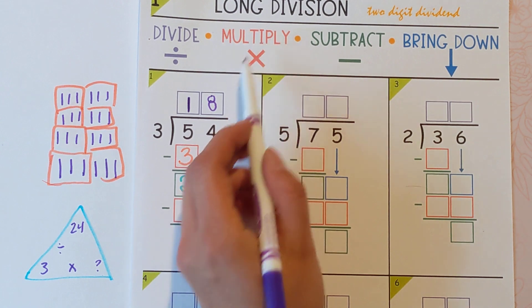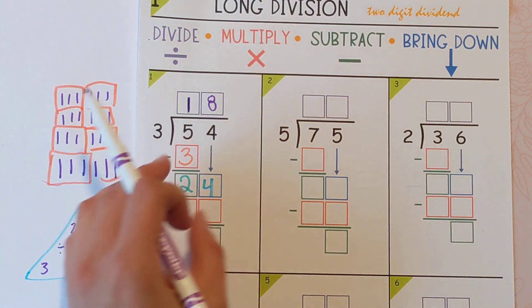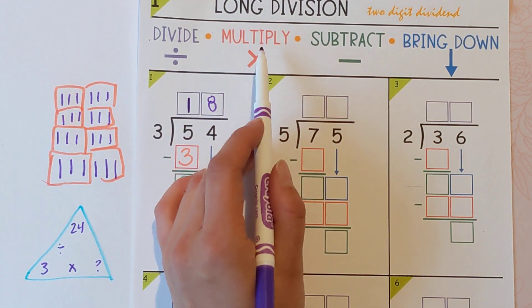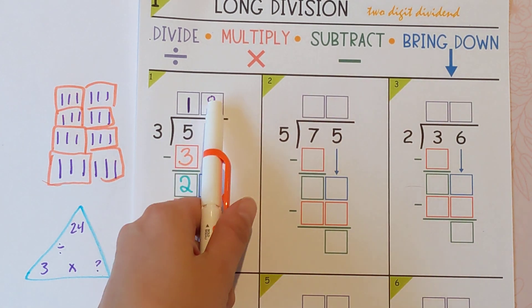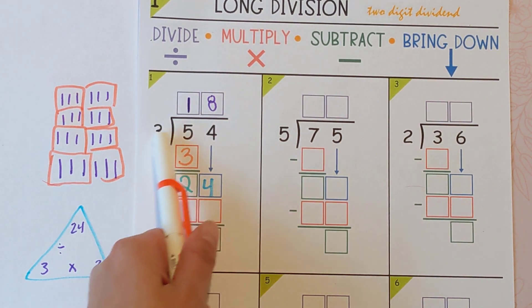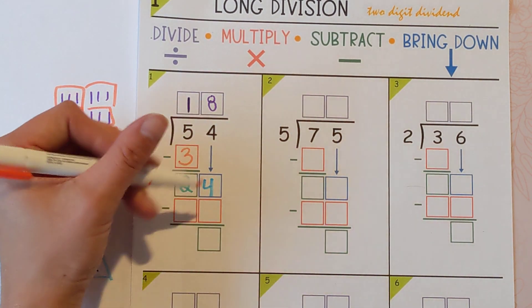And then we're going to multiply it back just to make sure that we got as close to 24 as we could. So the last thing you touch, which is the eight using that three. So eight times three is 24.